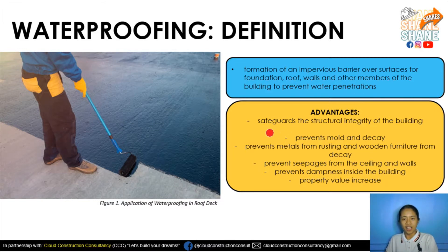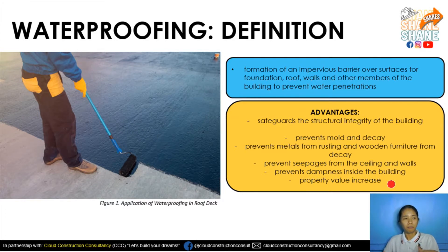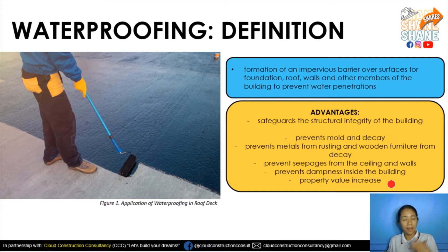The advantages are: it safeguards the structural integrity of the building. It also prevents mold and decay, prevents metals from rusting, and prevents wooden structures or furniture from decay. It prevents seepages from the ceilings and walls. If there's no waterproofing on parts of the structure, mold develops because of prolonged water exposure.